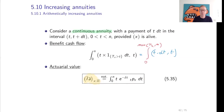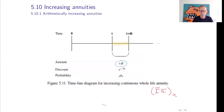Here is a timeline diagram for the increasing continuous whole life annuity. It is continuously increasing, the payments are continuous, and it is a lifelong annuity. In the interval [t, t+dt] you receive t dt, with discounting factor e to the power minus delta t, and the probability that you will receive it is t-p-x.